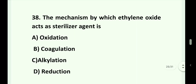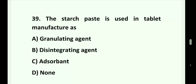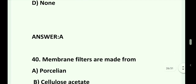Question number 38. The mechanism by which ethylene oxide acts as a sterilizing agent is: Option A. Oxidation. Option B. Coagulation. Option C. Alkylation. Option D. Reduction. Question number 39. The starch paste is used in tablet manufacture as: Option A. Granulating agent. Option B. Disintegrating agent. Option C. Adsorbent. Answer is Option A. Granulating agent.